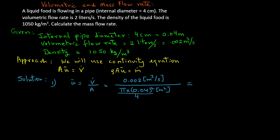Carrying out the calculation with cubic meters per second in the numerator and meters squared in the denominator, we get 1.59 meters per second. The meters-squared term in the denominator cancels with the cubic meters in the numerator to give us meters per second. So the average velocity is 1.59 meters per second.